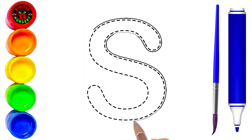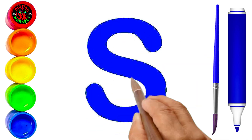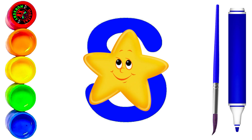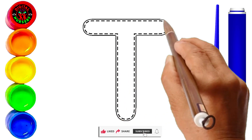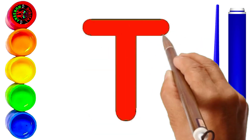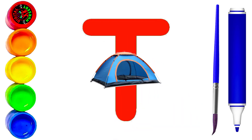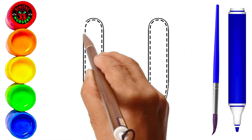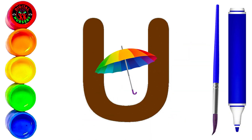S. We are tracing capital S letter by blue color. Wow, blue color of capital S. Good. Yes, S is for star. T. We are tracing capital T letter by red color. Yes, red color of capital T. Great. Yes, T is for tent. U. We are tracing capital U letter by brown color. Yes, brown color of capital U. Wow, you are best. U is for umbrella.